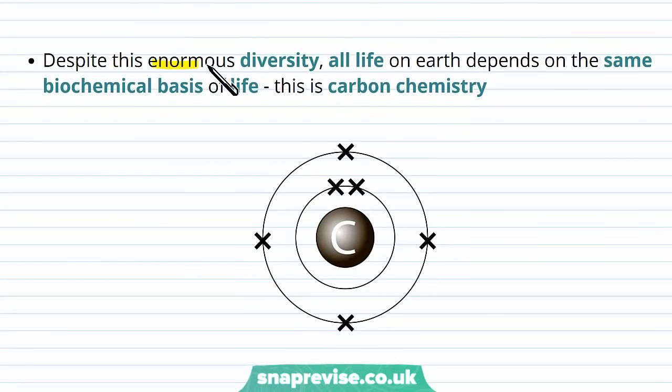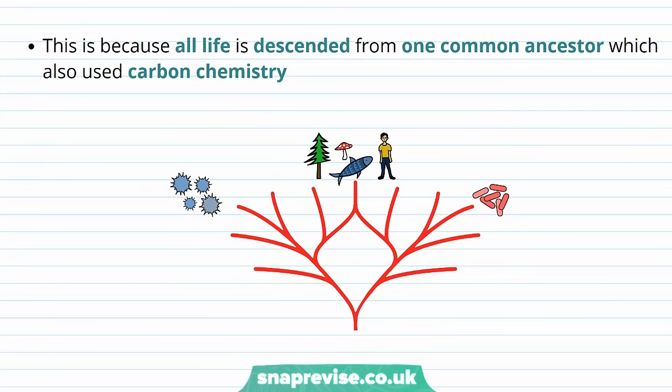But despite all of this enormous diversity in the life on Earth, every organism depends on the same biochemical basis of life, and we call this carbon chemistry. So even though there is such a massive diversity in all the organisms, they all boil down to the same kind of molecules. And we call the study of these molecules that give rise to life biochemistry. And it all centers around an element known as carbon, which has particular properties allowing life to exist.